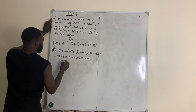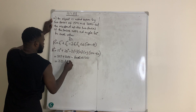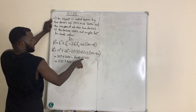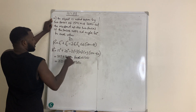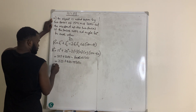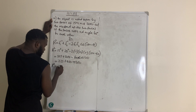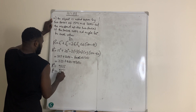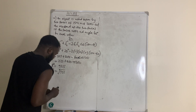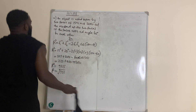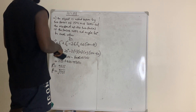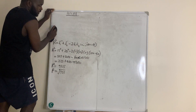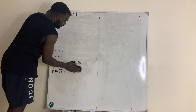cos(120) is minus 0.5, so minus 600 times minus 0.5 gives plus 300. Therefore R squared equals 225 plus 400 plus 300, which is 925. So R equals the square root of 925. Please cross-check this calculation because I don't have a calculator — punch it yourself to confirm the figures are correct.